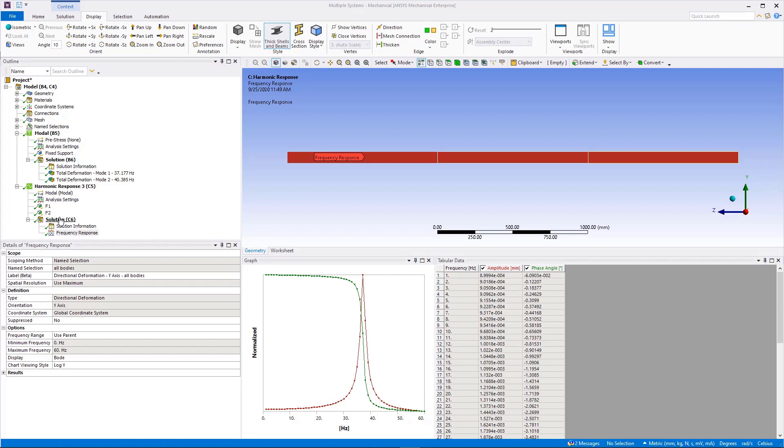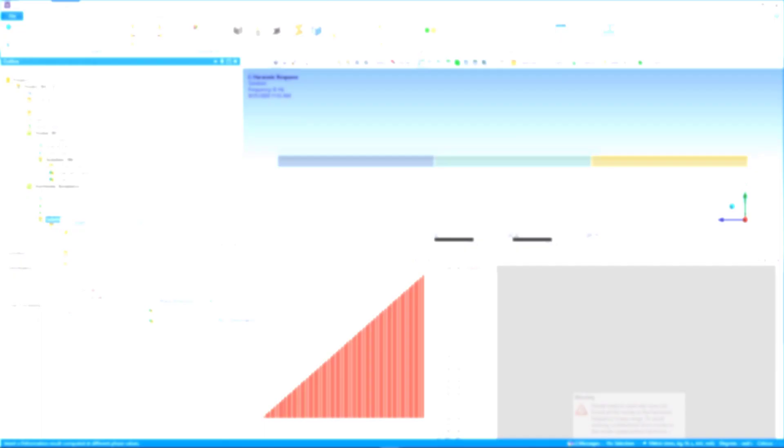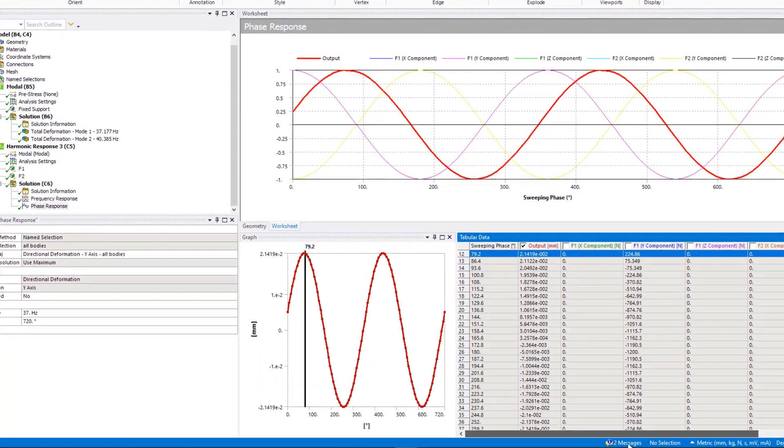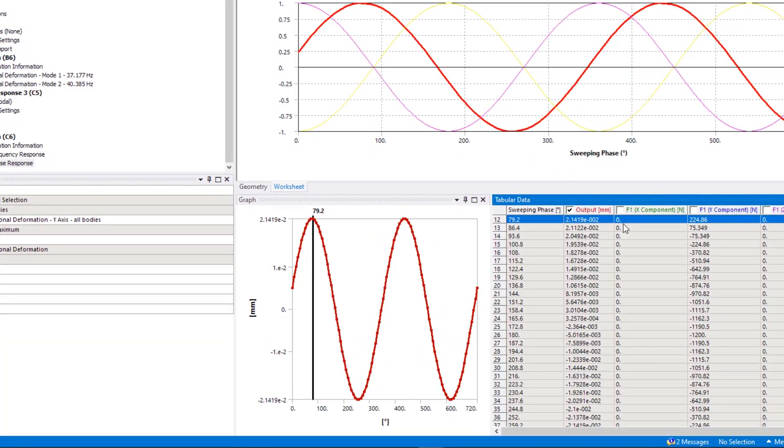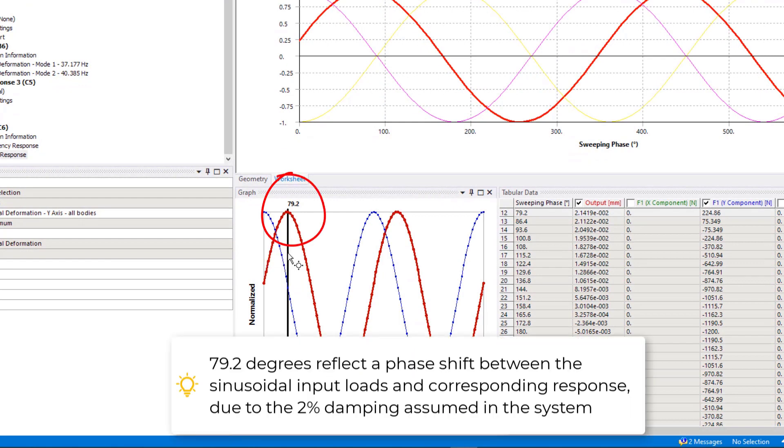Next, insert a phase response for same y-displacement component. Define the frequency as 37 Hz. From this graph, we can see that the maximum y-displacement will occur at 79.2 degrees.